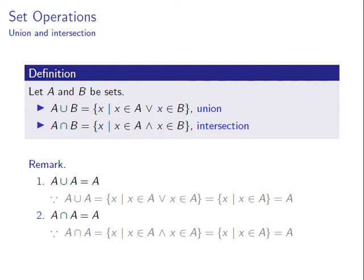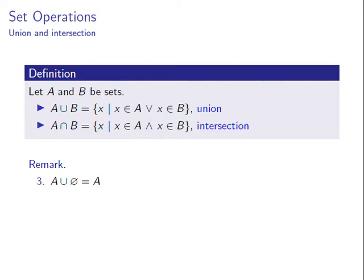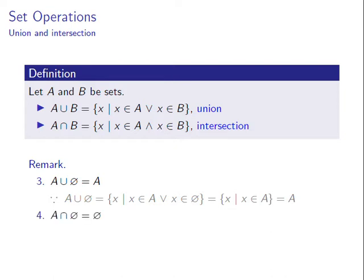Any set A union the null set is equal to A. This is because A union the null set consists of all objects x such that either x is in A or x is in the null set. Since the statement x is in the null set is false, this condition is equivalent to the condition x is in A, so A union the null set is equal to the set A.